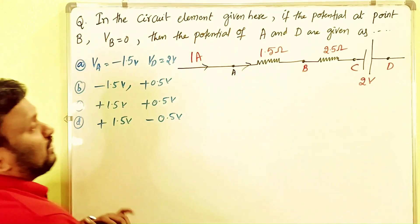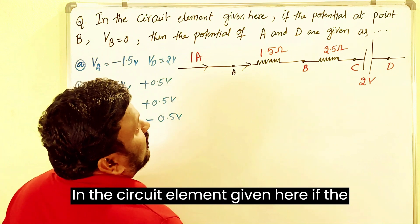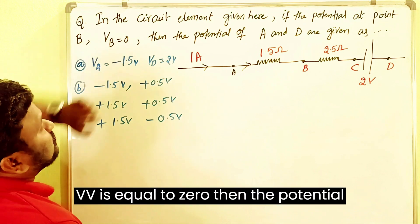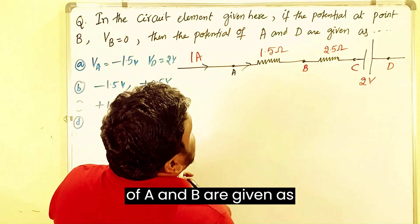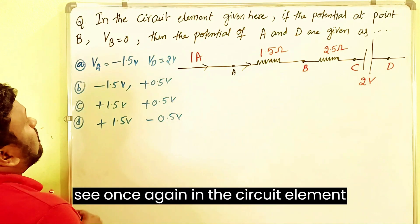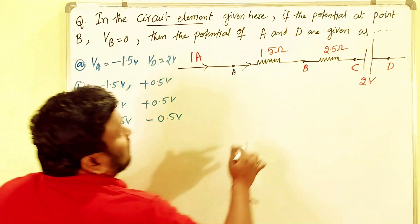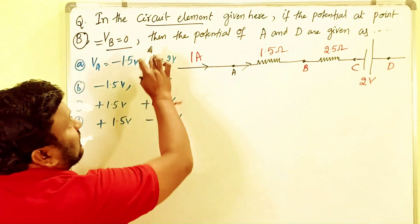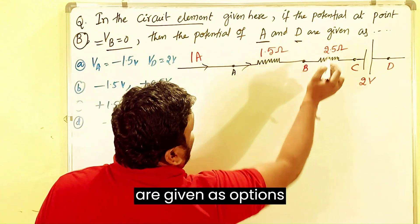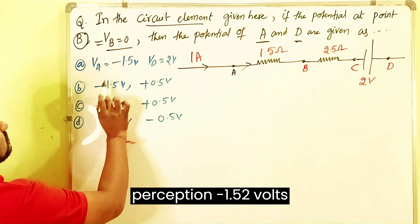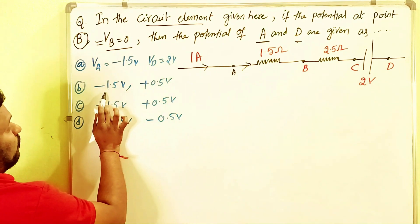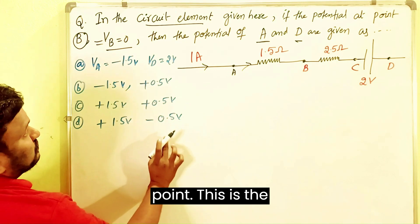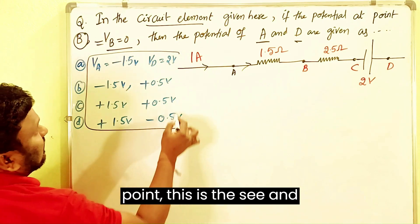Another important model: in the circuit element given, if the potential at point B is VB equals zero, then the potentials of A and D are given as options — first option: minus 1.5 and 2 volts; second: 1 and minus 1.5; third: 0.5 and 1.5; fourth: 1.5 and minus 0.5.